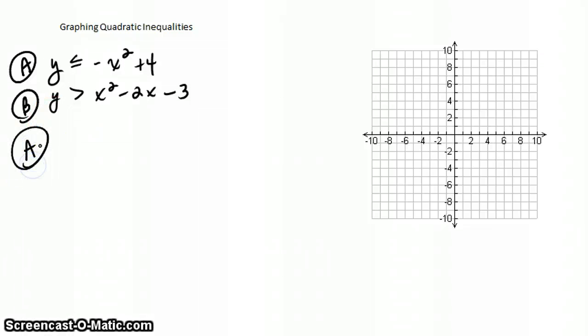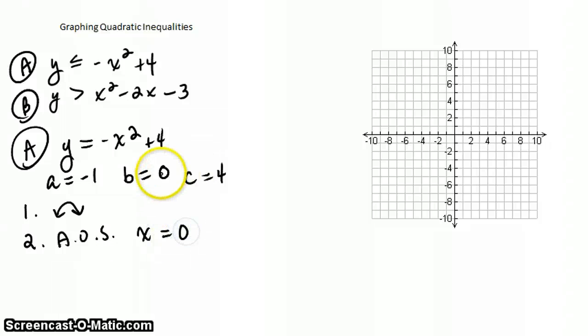So let's graph inequality a. So let's think about it. If it were the equation y equals negative x squared plus four. Okay, we've got it in standard form. Our a is negative one. Our b is zero because there's no plain x term. And our c is four. So our direction is going to be down because a is negative. Our axis of symmetry is x equals zero because b is zero. Zero divided by anything is always going to be zero.